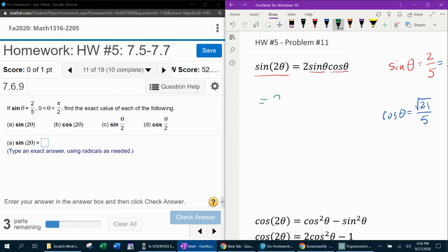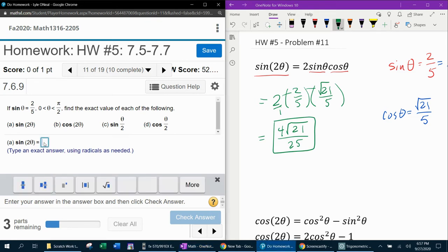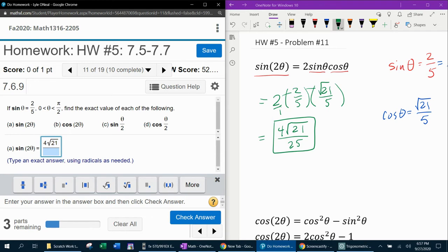So, sine of 2 theta is 2 times sine theta times cosine theta. And then I just need to work that out. So, the 2 out front is understood to be over 1. In the numerator, it's going to be 2 times 2 times square root of 21, which is 4 square root of 21 over 1 times 5 times 5, which is 25. And so, that should be our answer for sine of 2 theta, 4 square root of 21 over 25.